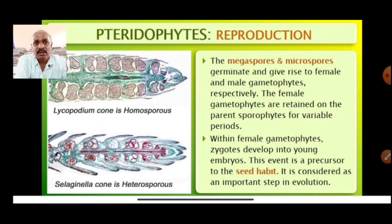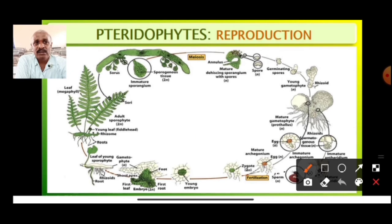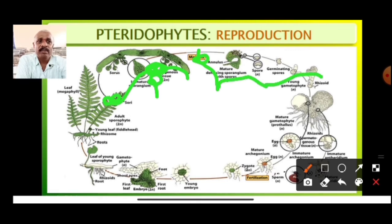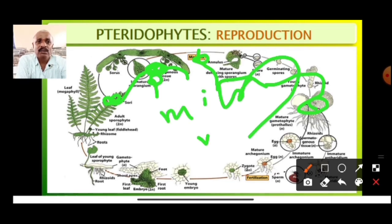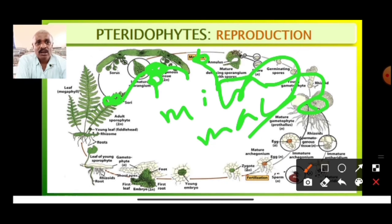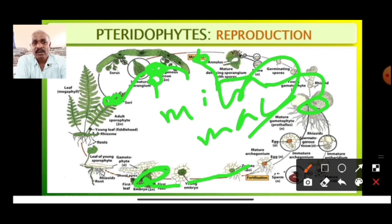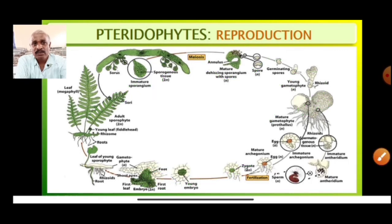Observing the life cycle: the sporangium produces spores by meiosis. These spores germinate and develop into a gametophytic body. Microspores produce the male gametophyte and macrospores produce the female gametophyte. Fusion of gametes takes place, forming the embryo and ultimately the sporophytic plant body.